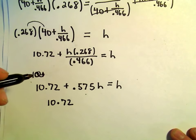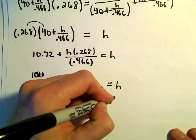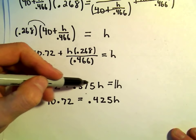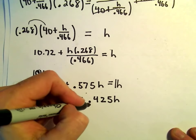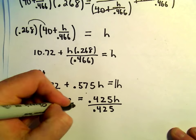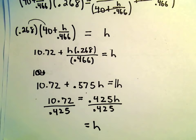So we'll have 10.72 equals 0.425h. Again, I'm just taking 1h and subtracting 0.575 and getting 0.425. And then we can divide both sides by 0.425. And that's now going to give us the height of our building.